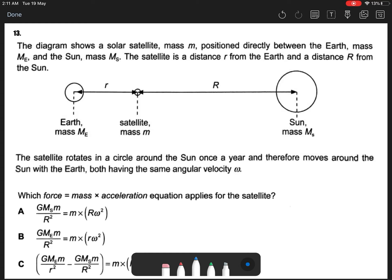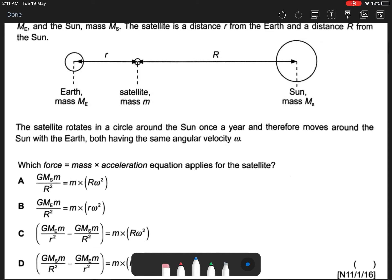The diagram shows a solar satellite mass m, positioned directly between the Earth and Sun. The satellite is at distance r from the Earth and R from the Sun. The satellite rotates in a circle around the Sun once a year and therefore moves around the Sun with the Earth, both having the same angular velocity. So which force, F equal to ma equation applies to the satellite?